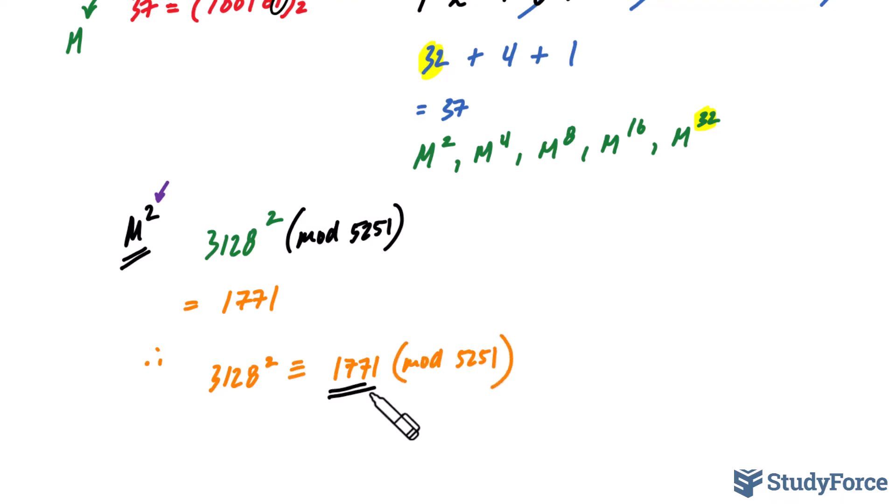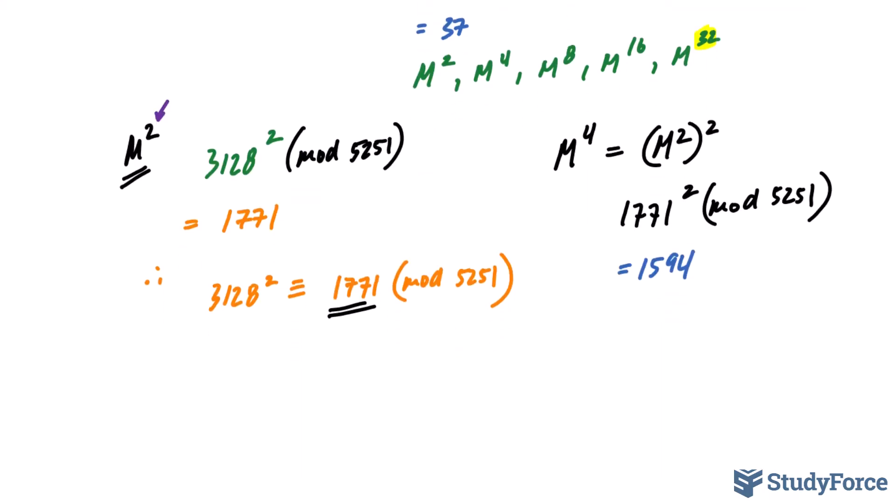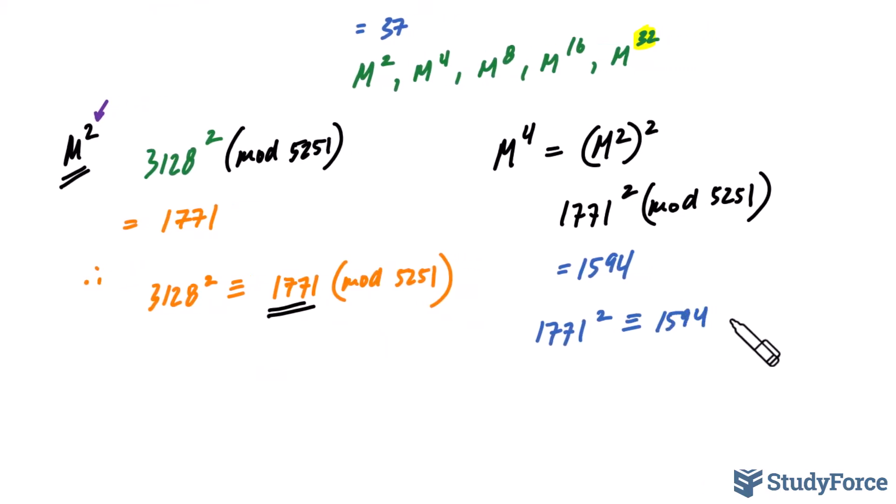Now using this value that we just found, we can actually calculate m^4 a lot easier. So watch this. m^4 is really no different than saying (m^2)^2. We're just using basic exponent laws here. And what we're finding now is 1771^2 mod 5251. Again, we'll have to find out what this value is to the power of 2, then take mod 5251 of that. But you'll find that the remainder happens to be 1594. And we write this down as 1771^2 is congruent to 1594 mod 5251. And we'll keep doing this until we reach m^32.